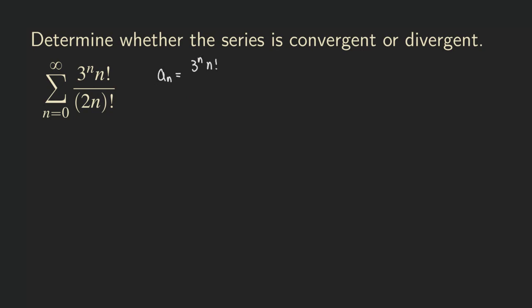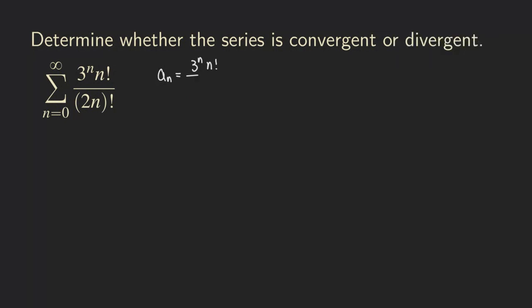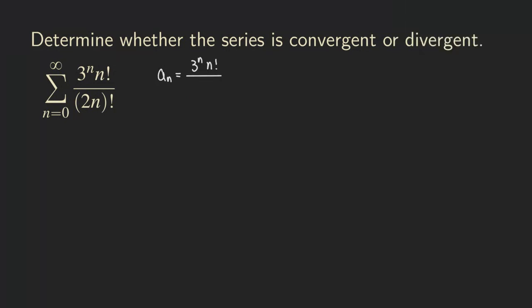So for a_n we are going to get 3 to the n and then n factorial in the numerator, and in the denominator we have (2n) factorial.